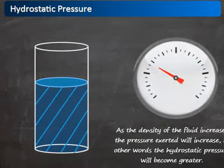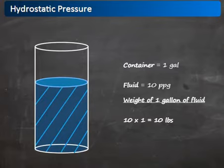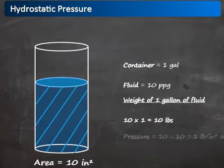Imagine a one-gallon container full of 10 pounds per gallon fluid. The weight of one gallon of fluid will be 10 multiplied by 1, which equals 10 pounds. If this weight was acting on an area of 10 square inches, the pressure would be 10 divided by 10, which equals 1 pound per square inch, or psi.